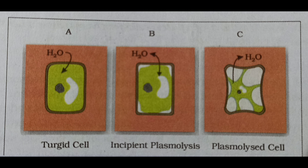Normal living cells kept in a hypertonic solution become flaccid. When we keep a cell in a hypertonic solution, water moves out — it is first lost from the cytoplasm and then from the vacuole as well. If water is also lost from the vacuole, the cell becomes fully plasmolyzed. The final figure shows the fully plasmolyzed cell.